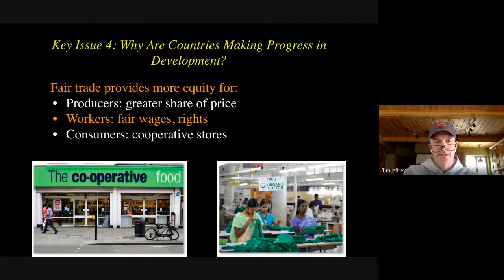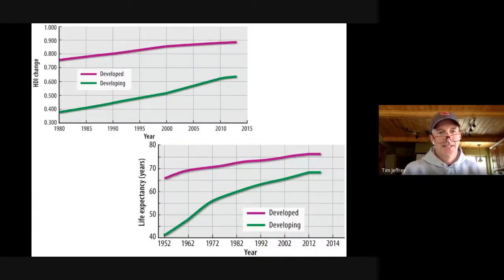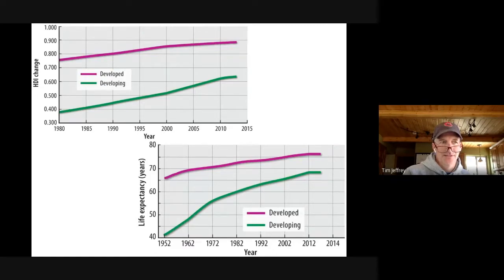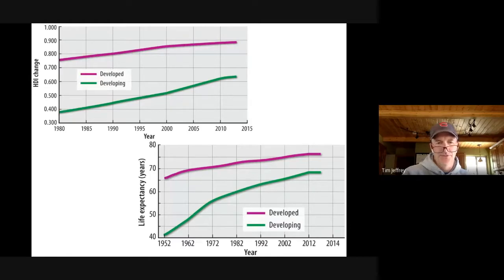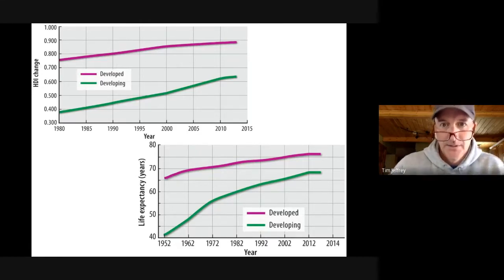Now we're in a globalized economy — we're trying to treat those workers a little bit more fairly. Now that we've started doing that, you can see changes in development. The developing countries have slowly caught up to developed countries, closing that gap slightly. If we could use more fair trade, maybe that gap will shrink some more. Life expectancy — that's the fusion of medical technology and medicines — as we can see in the last 20, 30, 40, 50 years, that gap has significantly closed. That's because we're beginning to share more of our technology with them.